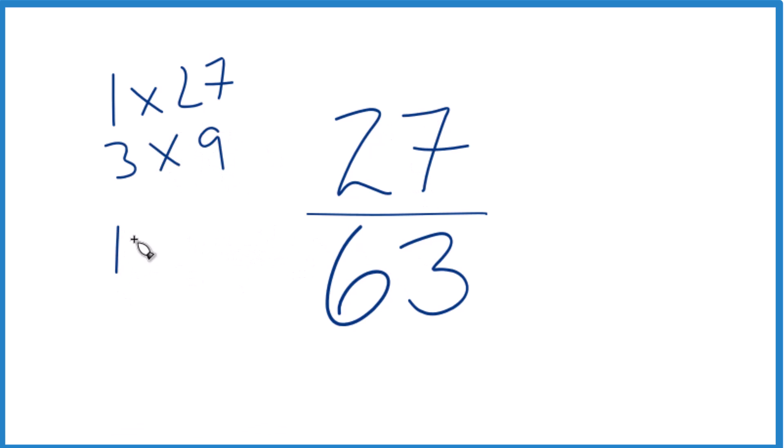For 63, it would be 1 times 63, then 3 times 21, and then 7 times 9. Those are the factors for 63.